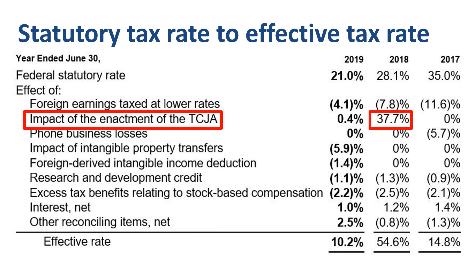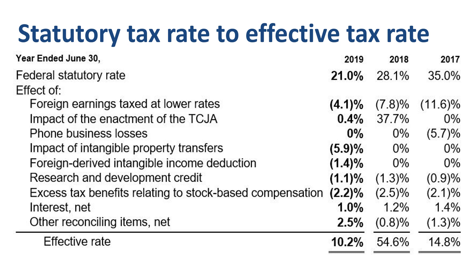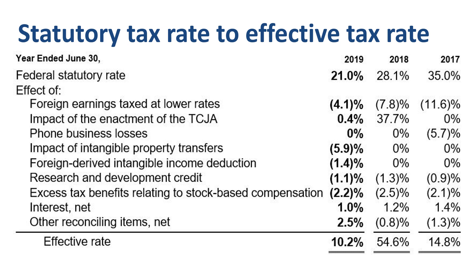The second line item is the one-time impact of the new US tax law, which actually led to significant one-time tax expenses and therefore a higher effective tax rate than the statutory rate for Microsoft in fiscal year 2018 — nearly 38% of income before taxes. The third line item is the realization of tax benefits attributable to previous phone business losses in fiscal year 2017. The fourth line item is a $2.6 billion net income tax benefit equal to 6% of income before taxes, related to intangible property transfers.